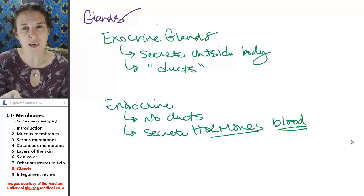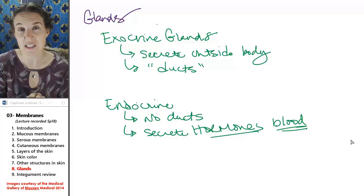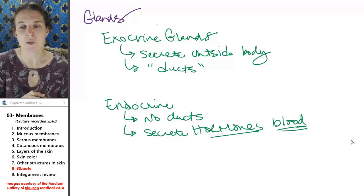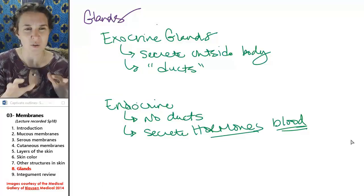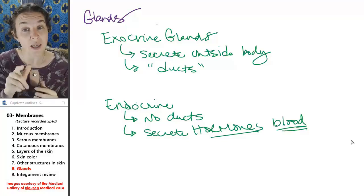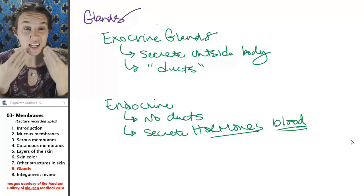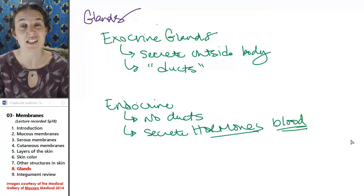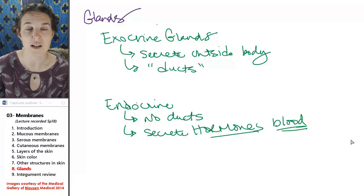We'll talk about the endocrine system in detail when we go over the nervous system because it's also kind of a controlling system. But exocrine glands, we're going to look at salivary glands in the next section, and those are definitely exocrine.